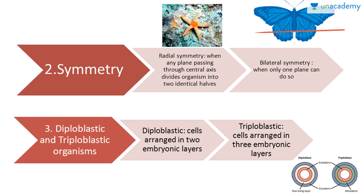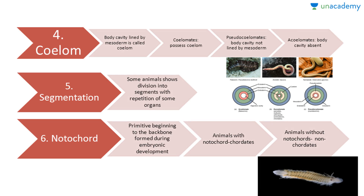The extra layer in triploblastic organisms is called mesoglea. Coelom is the body cavity lined by mesoderm; animals that possess a coelom are called coelomates. A body cavity not lined by mesoderm makes the animal a pseudocoelomate, and animals without any body cavity are called acoelomates.